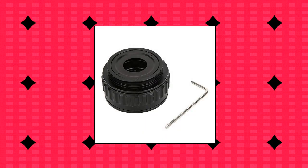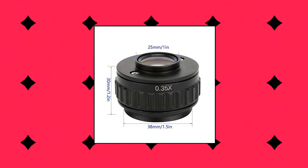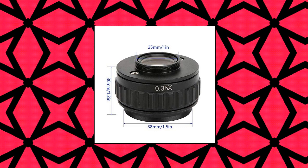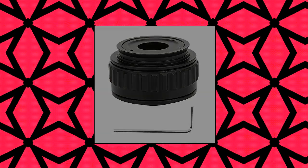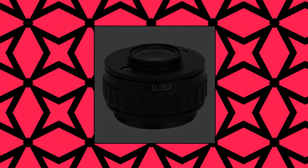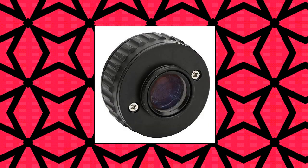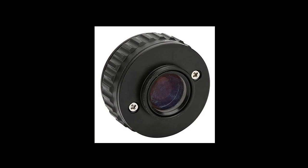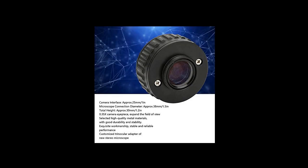Lix Microscope Lens Camera Interface. This is a 0.35x camera eyepiece customized trinocular adapter for a new stereo microscope. Expands the field of view, making observation more effective. One end of the interface is the microscope interface thread and the other end is the C interface, easy to observe the internal structure of small objects. Selected high-quality metal optical glass materials, with good durability and stability, exquisite workmanship, stable and reliable performance, with long service life.